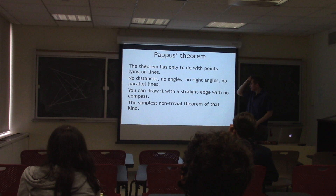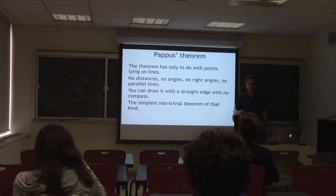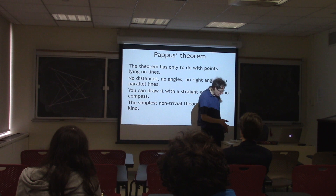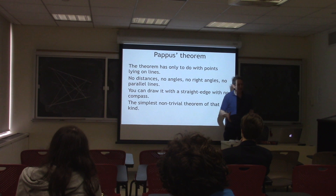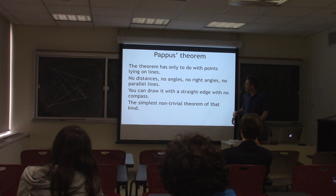This is a remarkable theorem in many ways, but one way is that it only has to do with points lying on lines. There are no distances, there are no angles, there's not even a right angle. So you can draw it with a straight edge without any compass. If you think about the theorems you've learned in geometry class, probably none of them were like that. They all involve distances, or angles, or something of the kind, as a circle implicitly involves a shape of constant distance.